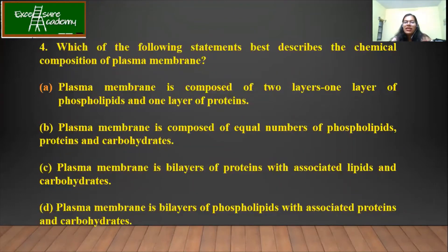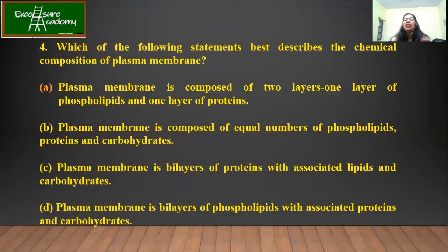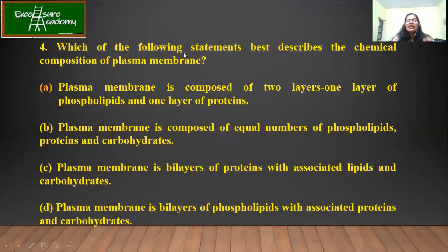Which of the following statements best describes the chemical composition of the plasma membrane? In the first lecture, I mentioned that plasma membranes are a phospholipid bilayer. Option A — composed of two layers, one of phospholipids and one of proteins — is wrong because both layers are phospholipids. Option B — equal numbers of phospholipids, proteins, and carbohydrates — is wrong; the main composition is lipids with certain amounts of proteins and carbohydrates. Option C — a bilayer of proteins — is also wrong. Option D — a bilayer of phospholipids with associated proteins and carbohydrates — is correct. The answer is D.